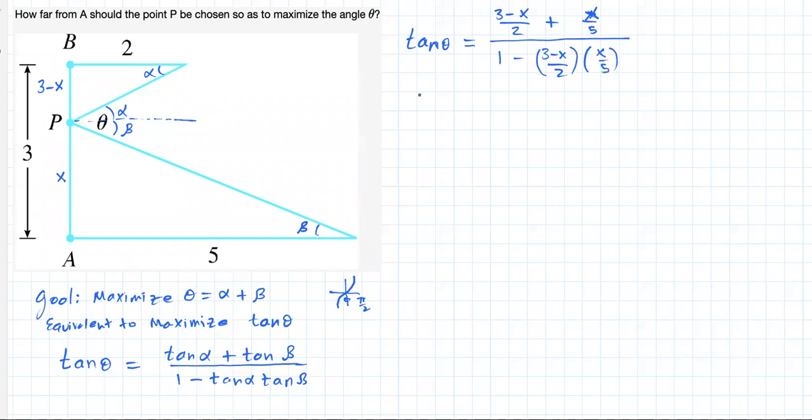Now, when you simplify this expression, cancelling the denominators and stuff, you are going to get this: 15 minus 3x on the numerator, on the denominator, 10 minus 3x plus x squared.